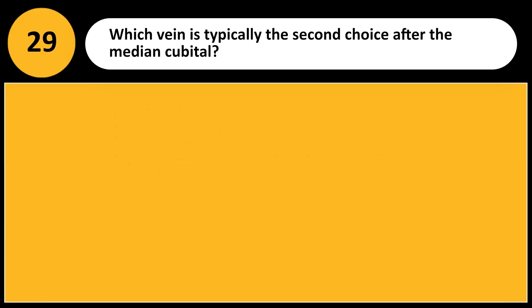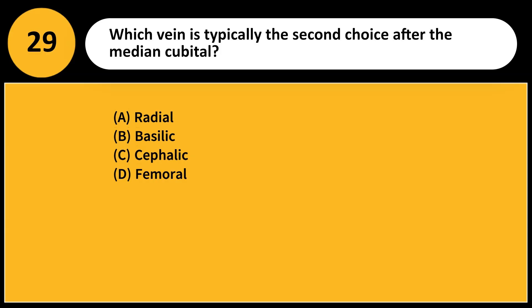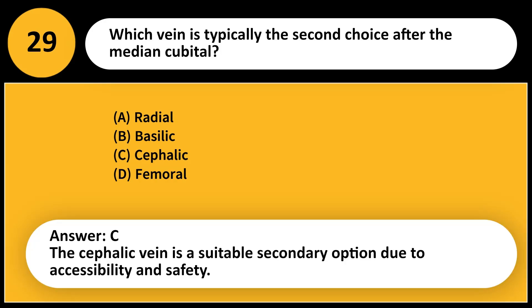Which vein is typically the second choice after the median cubital? A. Radial. B. Basilic. C. Cephalic. D. Femoral. Answer: C. The cephalic vein is a suitable secondary option due to accessibility and safety.